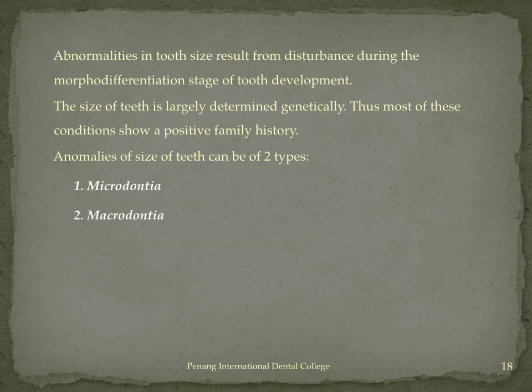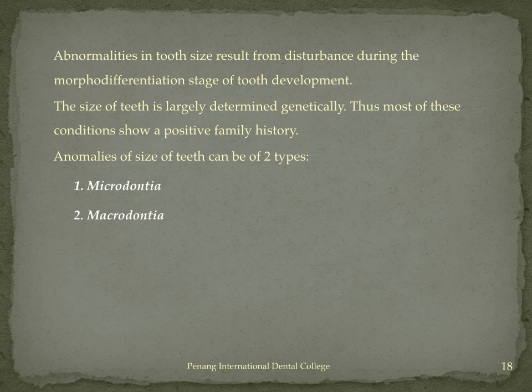Anomalies of size are broadly of two types: microdontia, where teeth are small, and macrodontia, where teeth are large. Such abnormalities in tooth size result from disturbances during the morphodifferentiation stage of tooth development. They are determined genetically to a large extent, so there will be a positive family history.